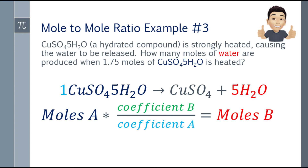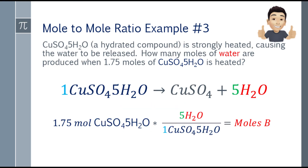I'll also write the coefficient and formula. Since there is no coefficient shown for copper sulfate pentahydrate, it is understood to be 1. Substituting into the formula: moles A is 1.75 moles of copper sulfate pentahydrate, multiplied by coefficient B (5H2O), over coefficient A (1 copper sulfate pentahydrate), equals moles B.